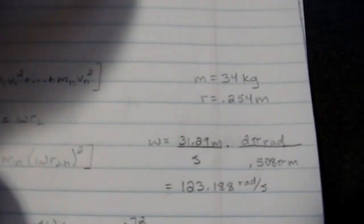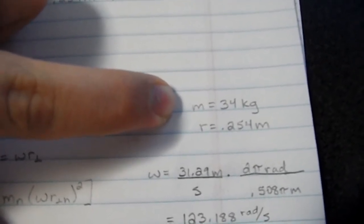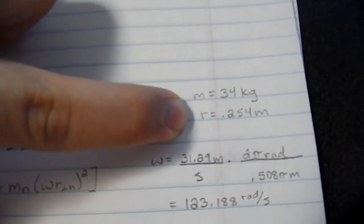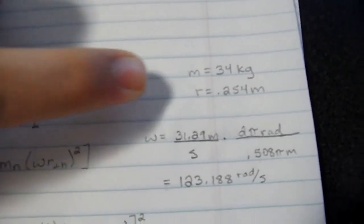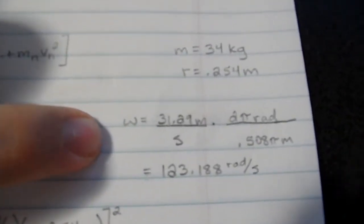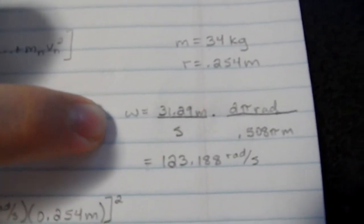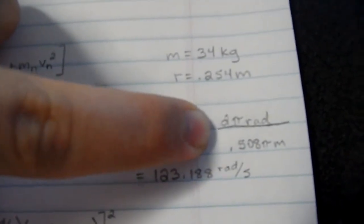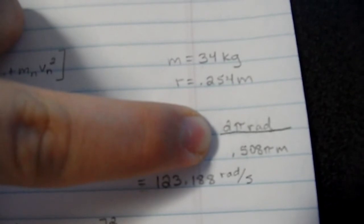Now just remember, recall what our actual pieces are. The mass of the wheel is 34 kilograms, the radius is 0.254 meters, and to calculate the angular speed, we have 31.29 meters per second times the 2π radians over 0.508π meters.